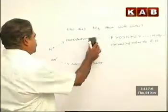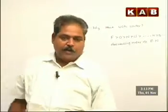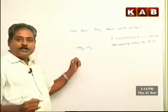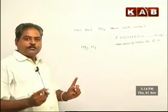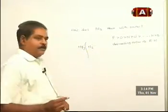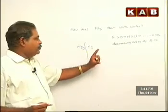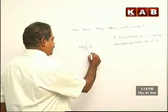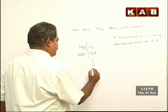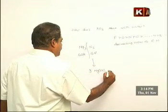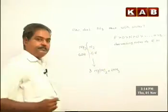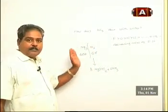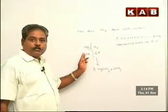Let us look at other reactions of water, which is called hydrolysis. How will you hydrolyze Mg3N2 — magnesium nitride? Hydrolysis means break the bond. H+ should go to the more electronegative, which is obviously nitrogen. So you have 6H here and 6OH here, and the product will be 3 magnesium hydroxides and 2NH3.